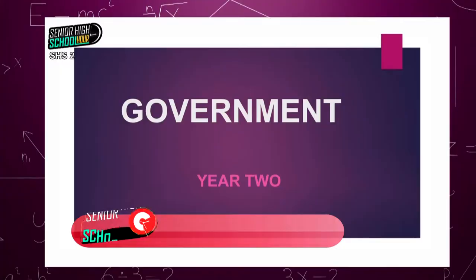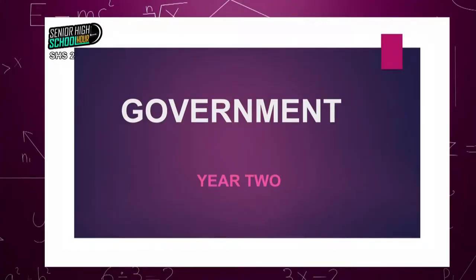This is Government Year Two. You remember in our previous submissions, we talked about colonization and the processes that have to do with colonization. In our previous encounter, we talked about how our chiefs were used to get the British to rule us. Today, we'll talk about some administrative matters. The first one is the Crown Colony System.